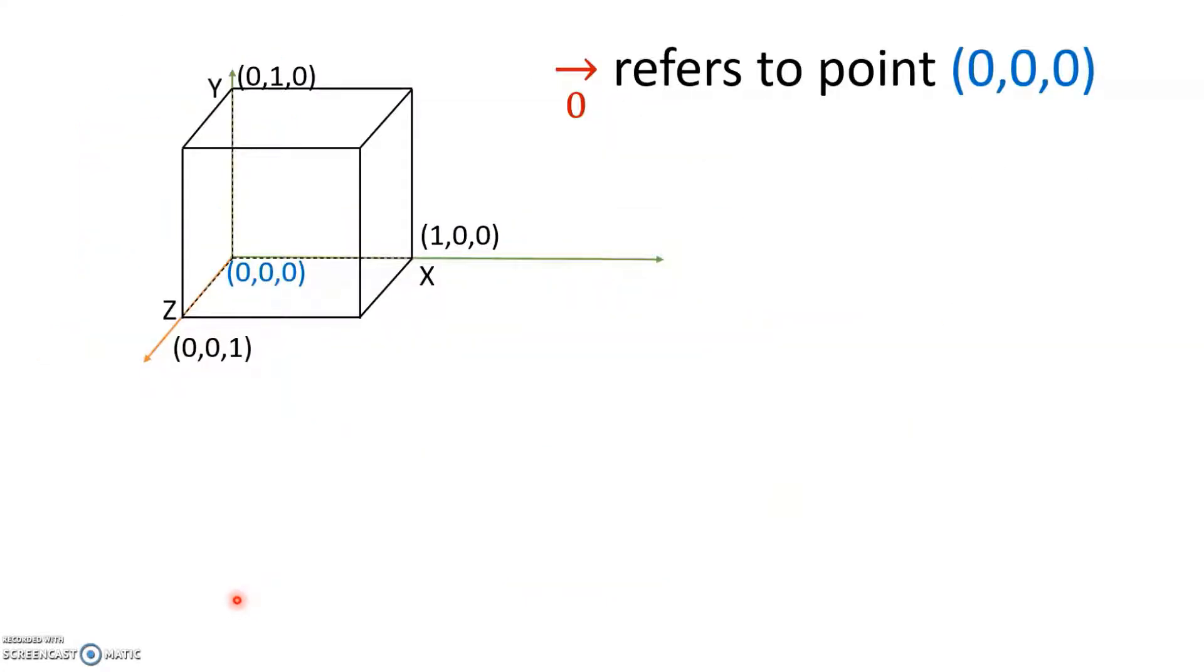Before we move on I want you to visualize a cube in a three-dimensional space and I'm going to call this cube a unit cube. What do I mean by that? Each side of it is one unit. Whether you call it the base here, this length is one unit, this height is one unit, this projection is one unit. So it's all one unit on all the sides.